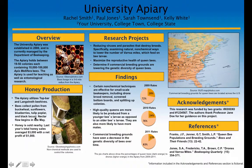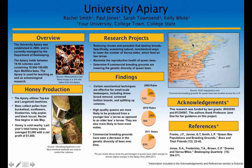Under honey production, they give details about the types of beehives that were used. Under research projects, they use terms like 'varroa mites' as well as 'commercial breeding grounds lowering the genetic diversity,' again assuming that their readers have a high level of knowledge about the general topic. Under findings, they provide detailed information about previous research conducted.